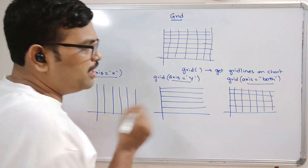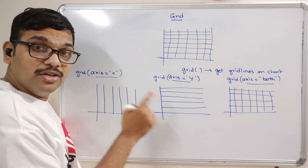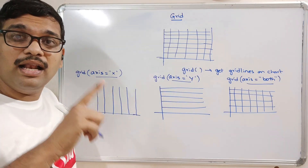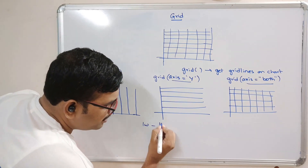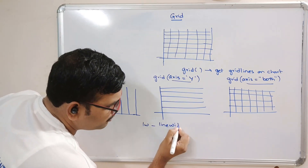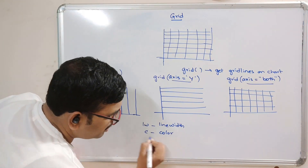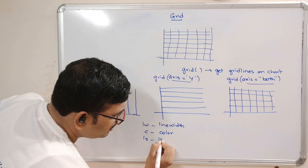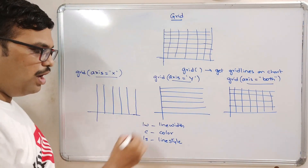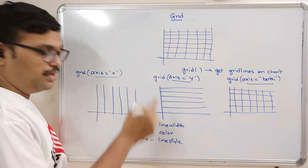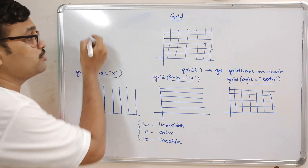These grid lines are just lines, so we can also apply line properties. Line properties means line width, color, and ls — that is line style. All these things can be applied for this grid, and these are also parameters for the grid function.